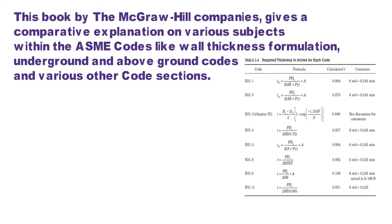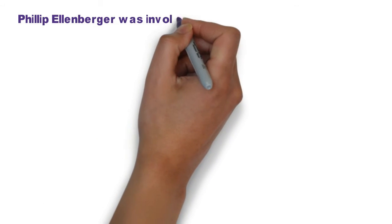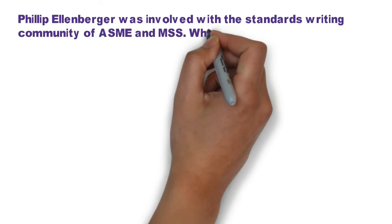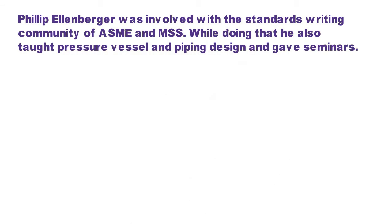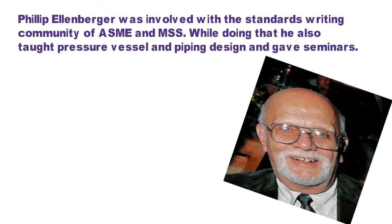So B31.1, B31.3, B31.4, B31.8, B31.11, they all are compared section-wise and thus we have a complete overall picture of what is stated in which code and why and how much safety or margins are considered. Philip Allenberg was involved with the standards writing community of ASME and MSS. While doing that, he also taught pressure vessels and piping design and gave various seminars.